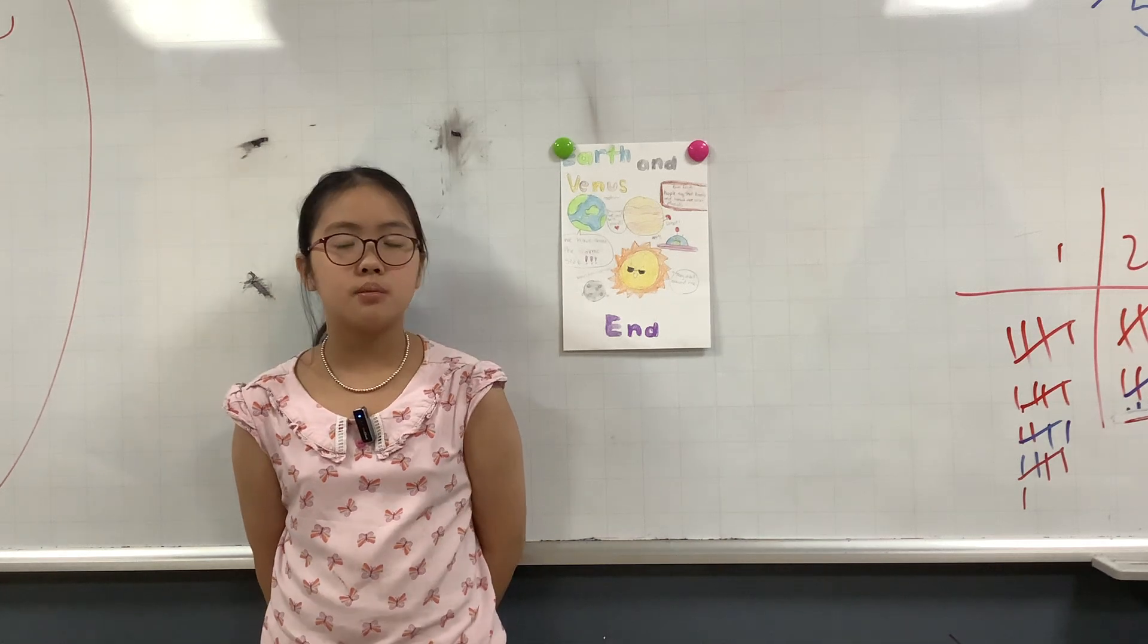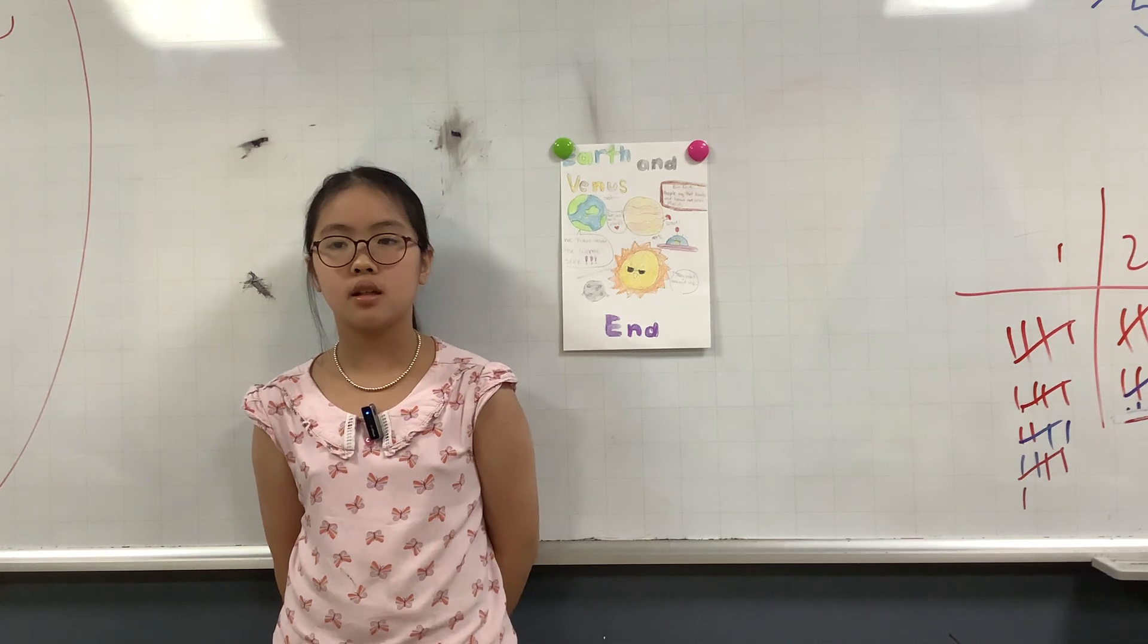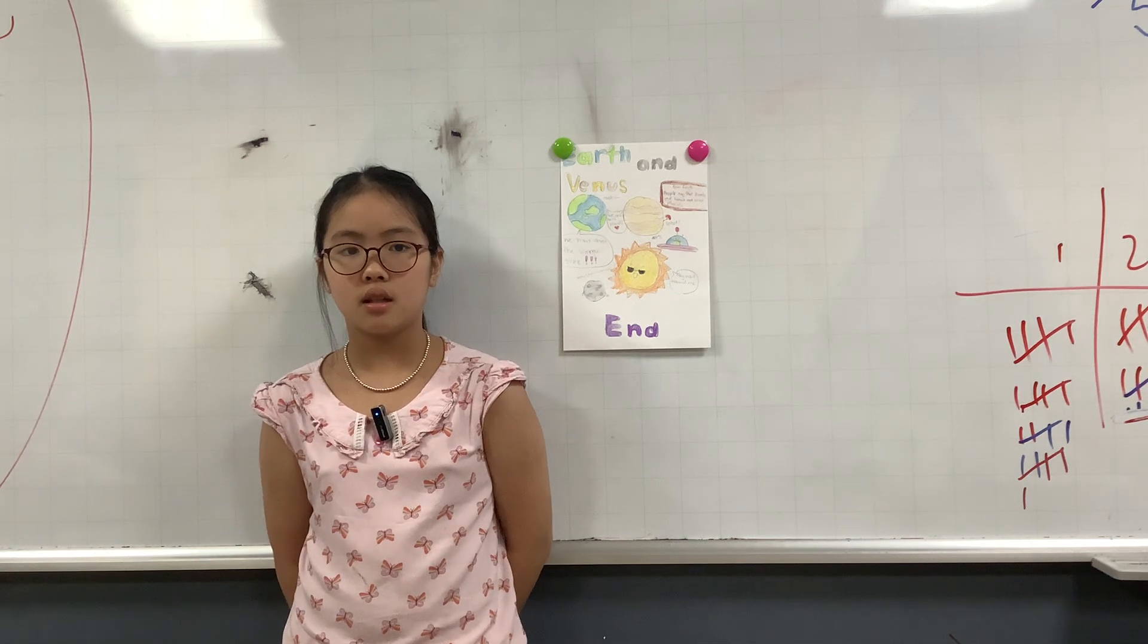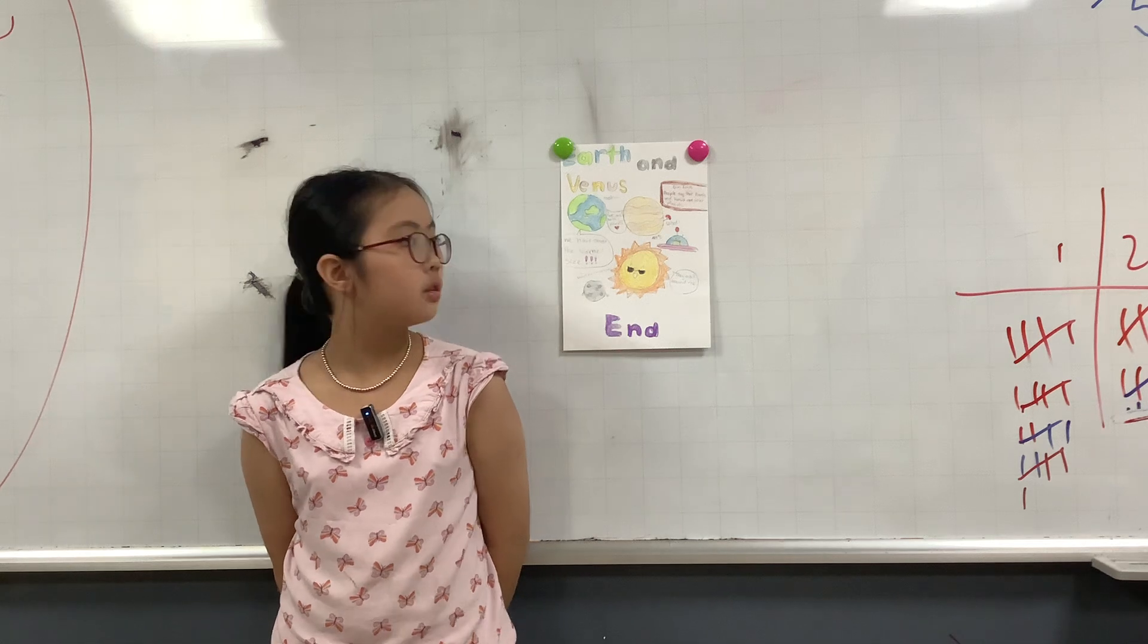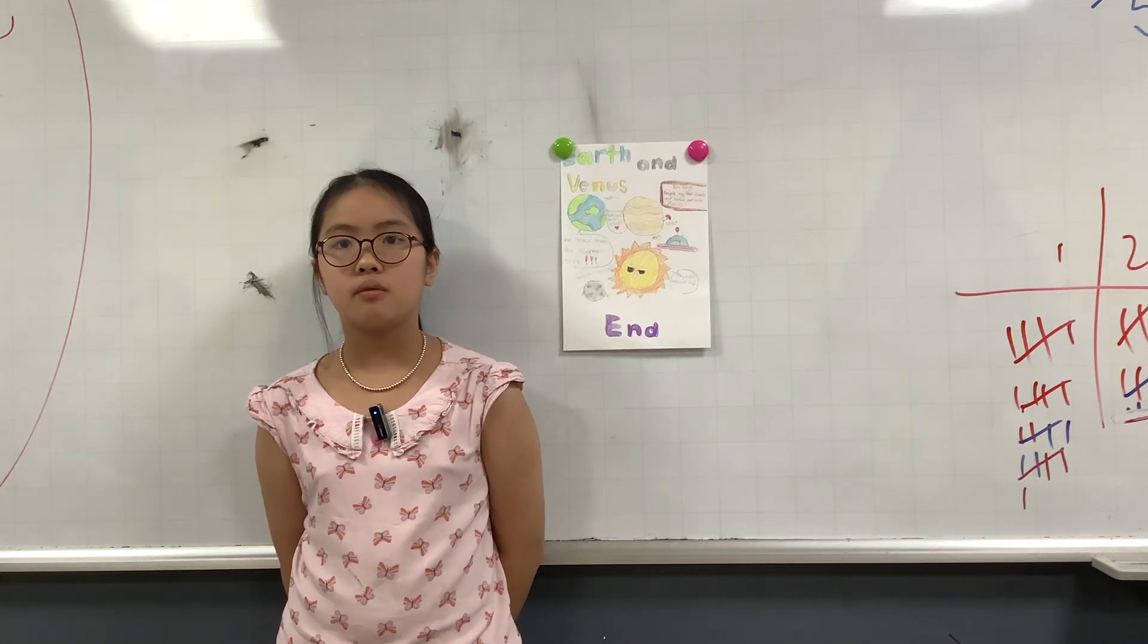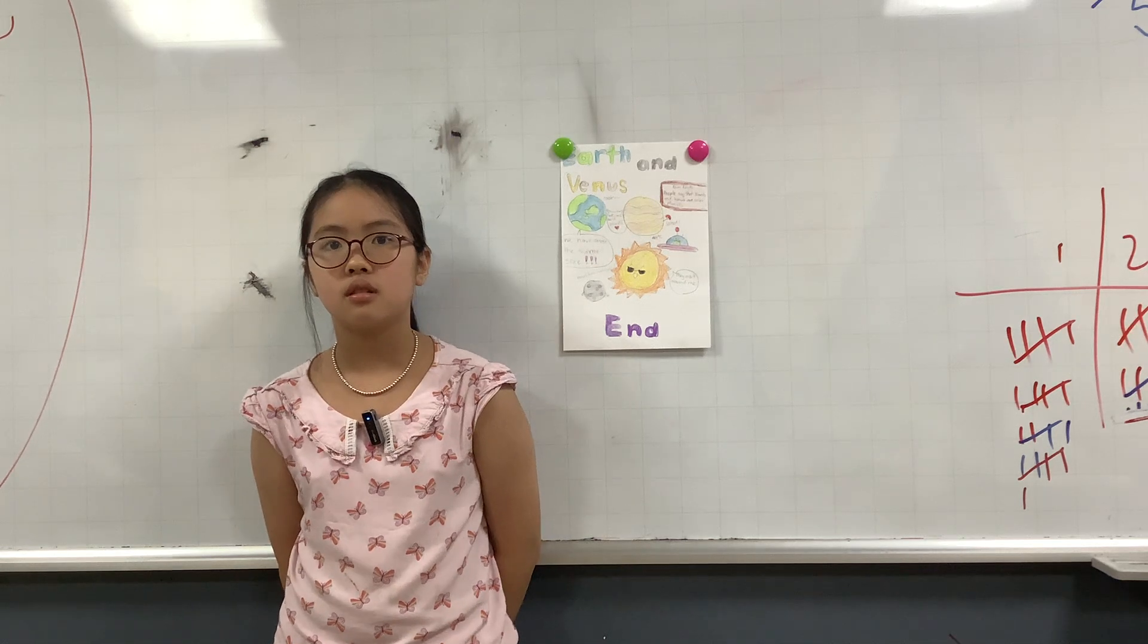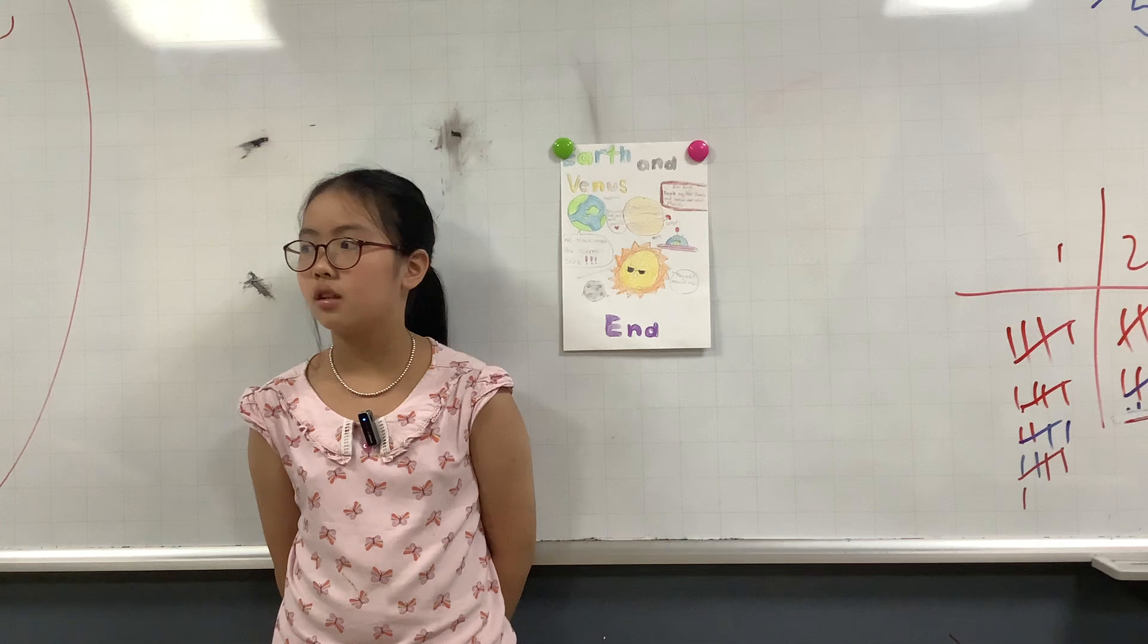Earth has a moon. Venus, unlike Earth, doesn't have any moon. This is the end of the presentation. Thank you.